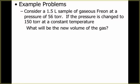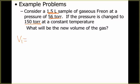So this is what these problems will look like. It says we have a 1.5-liter sample of gaseous freon at a pressure of 56 torr. If the pressure is changed to 150 torr at constant temperature, what is the new volume of the gas? Whenever you do these gas law problems, I would go through and make a list of what they give me and what they're asking me to find. My first one is a volume, so V1 equals 1.5 liters. The second piece of information is a pressure — tor is a pressure measurement — so P1 equals 56 torr.